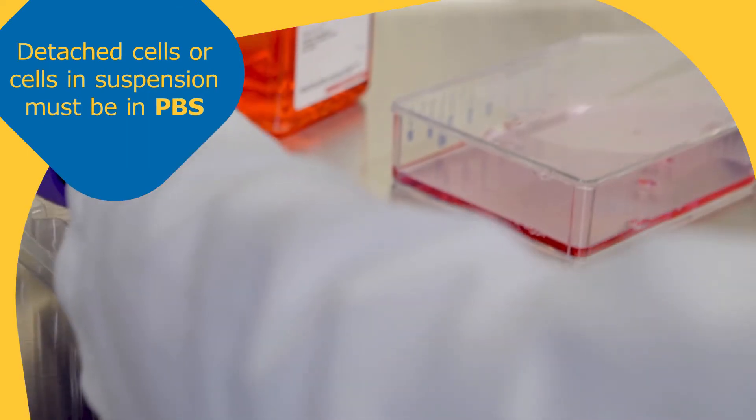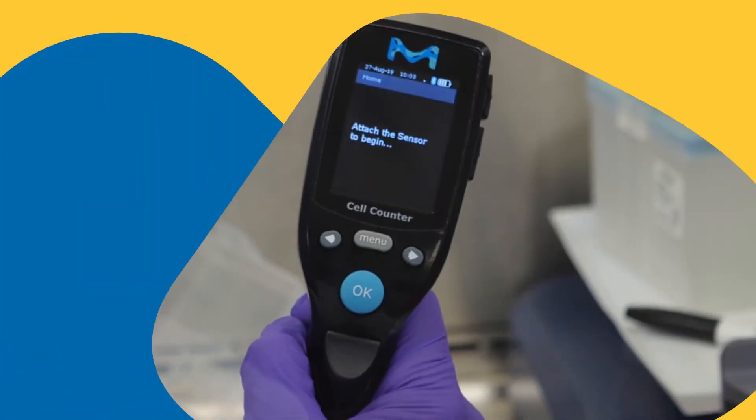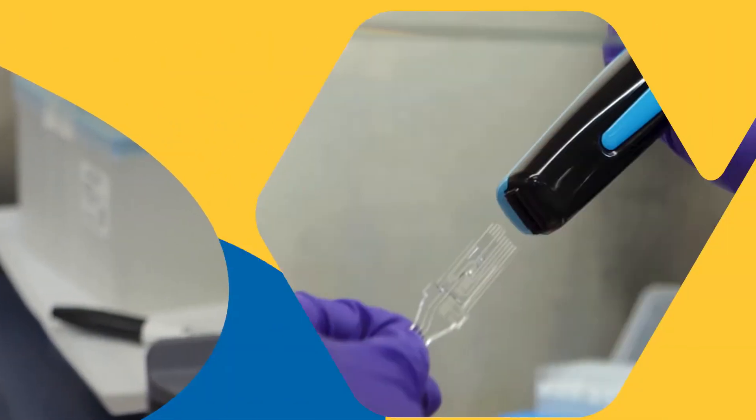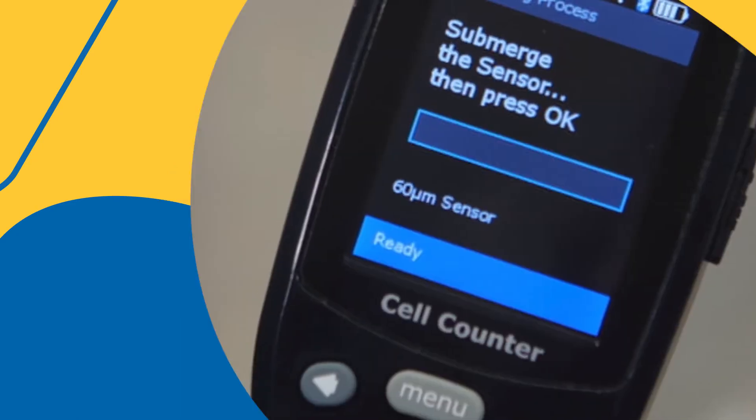When you're ready to count cells, simply power up the handheld instrument and insert the sensor when instructed. Streamlined sensor design guides correct insertion and makes it easy to count from plates or tubes.